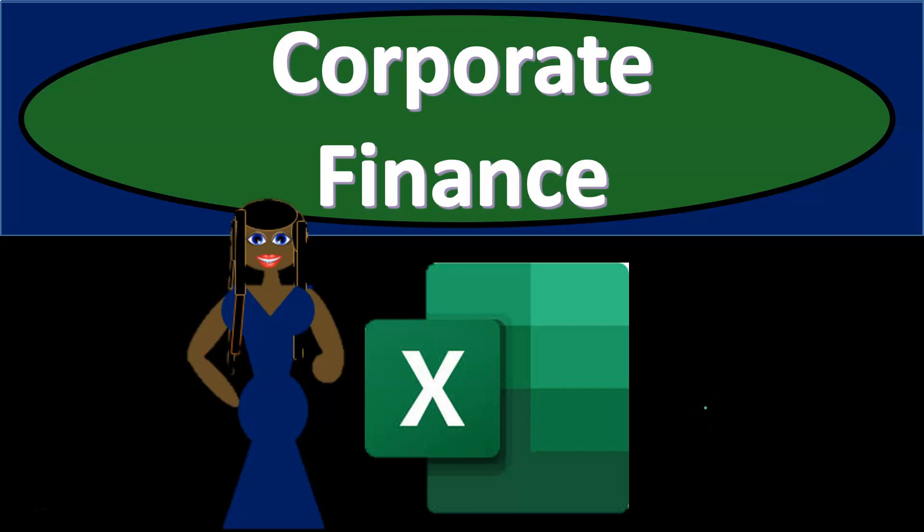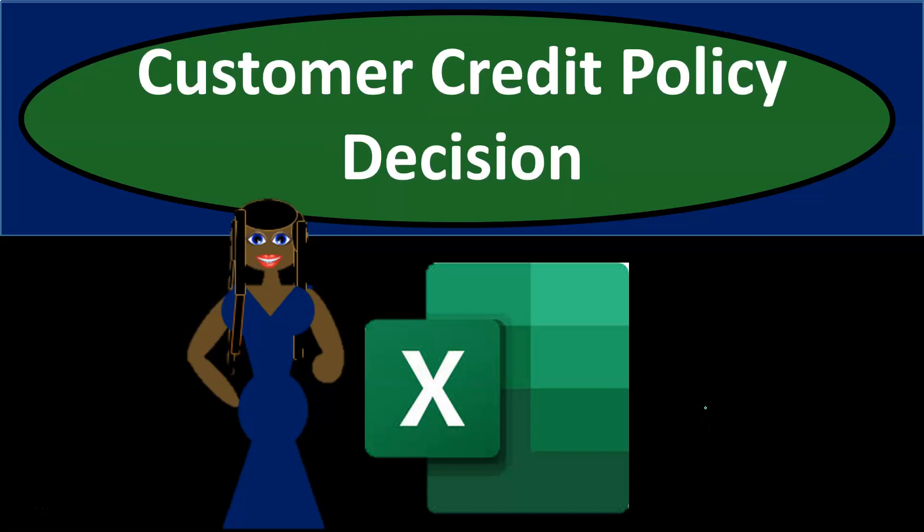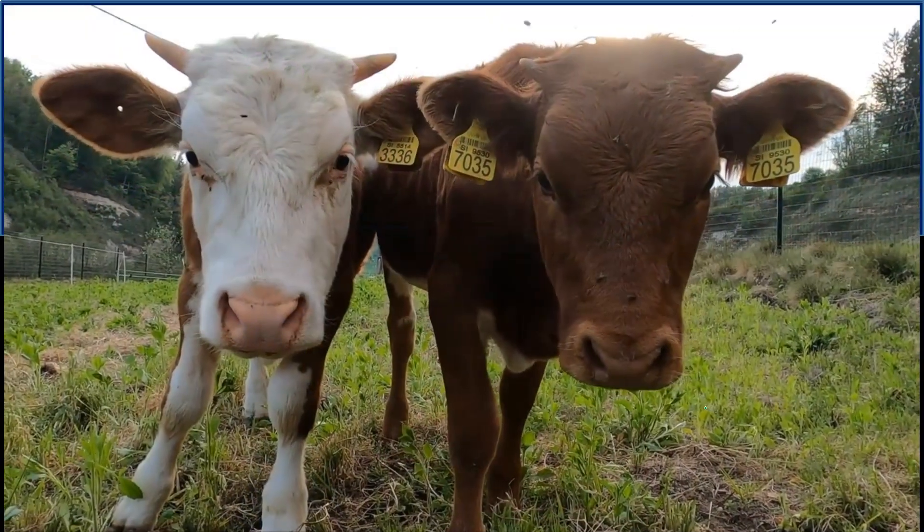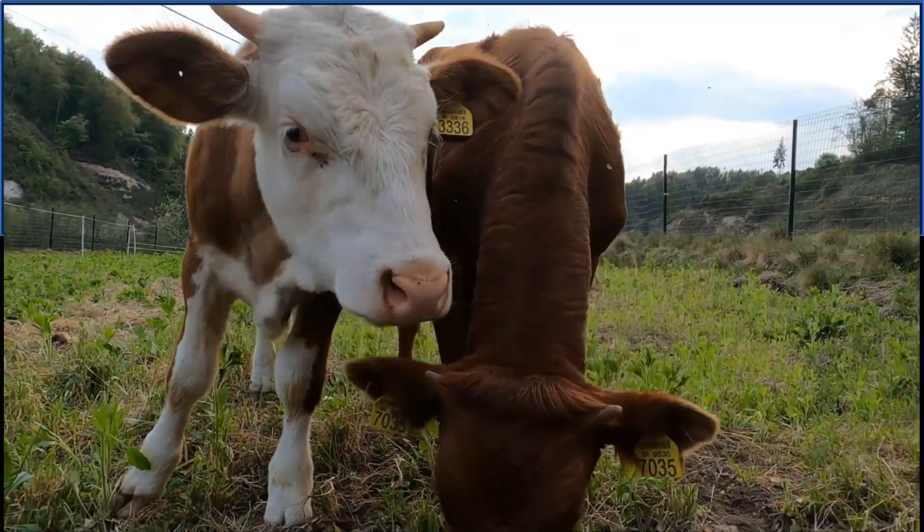In this presentation we're going to work a practice problem in Excel related to a customer credit policy decision — making a decision as to whether we want to lower the credit policy criteria for customers in order to make a sale. This could increase sales because we might have more customers, but we'll also have more credit risk: the risk of not being able to collect on accounts receivable. We'll be balancing those two factors.